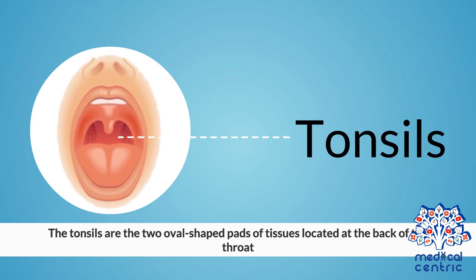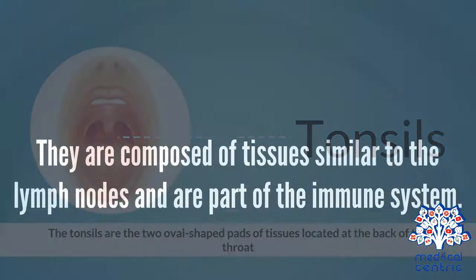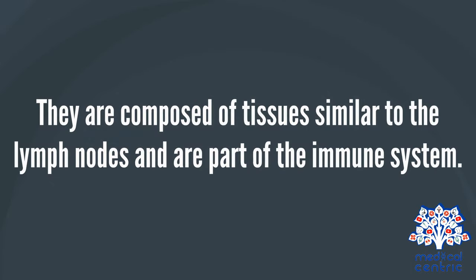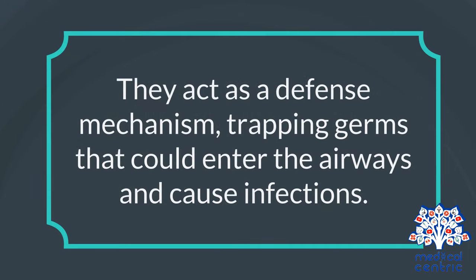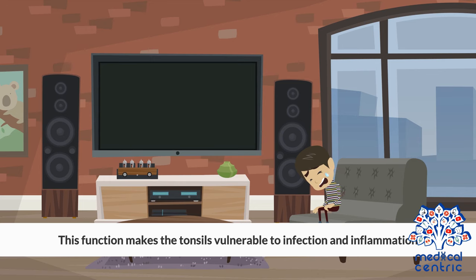The tonsils are the two oval-shaped pads of tissues located at the back of the throat. They are composed of tissues similar to the lymph nodes and are part of the immune system. They act as a defense mechanism, trapping germs that could enter the airways and cause infections. This function makes the tonsils vulnerable to infection and inflammation.